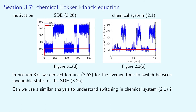In our previous lectures, we considered stochastic differential equations with multiple favorable states. Our illustrative example was the SDE326. We chose its parameter values so that the SDE326 has two favorable states, one around 100 and one around 400. The solutions of the SDE326 fluctuate around these steady states and occasionally switch between them, as we see in figure 3.1d.